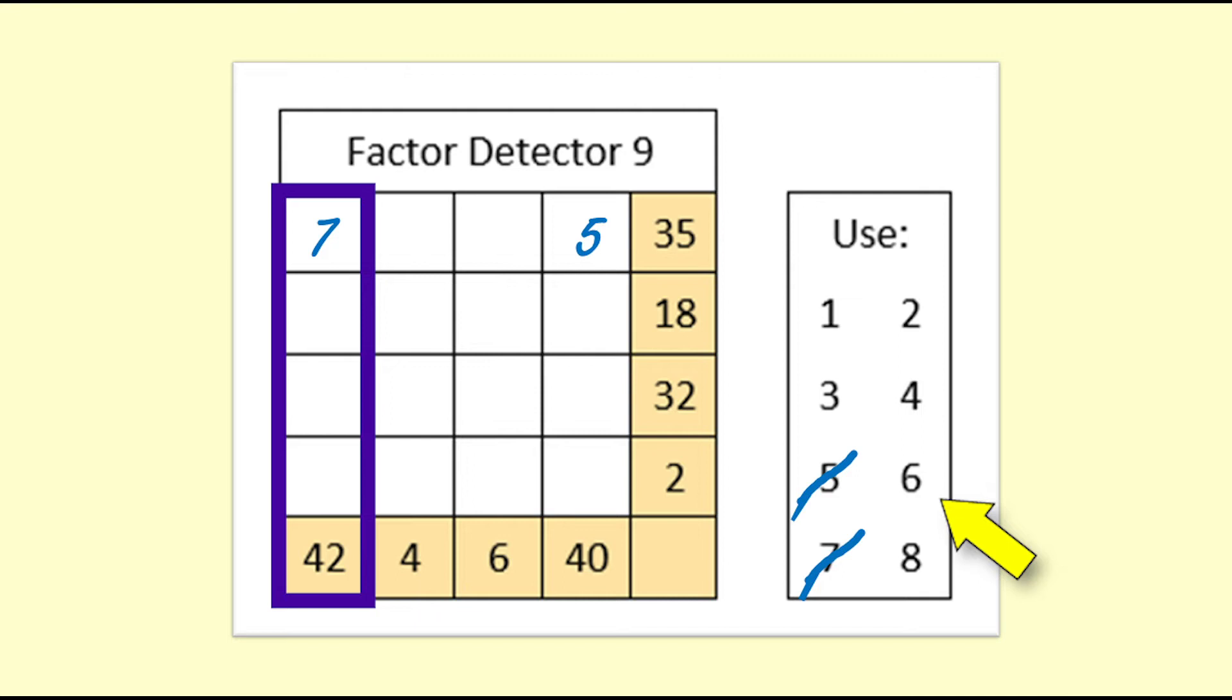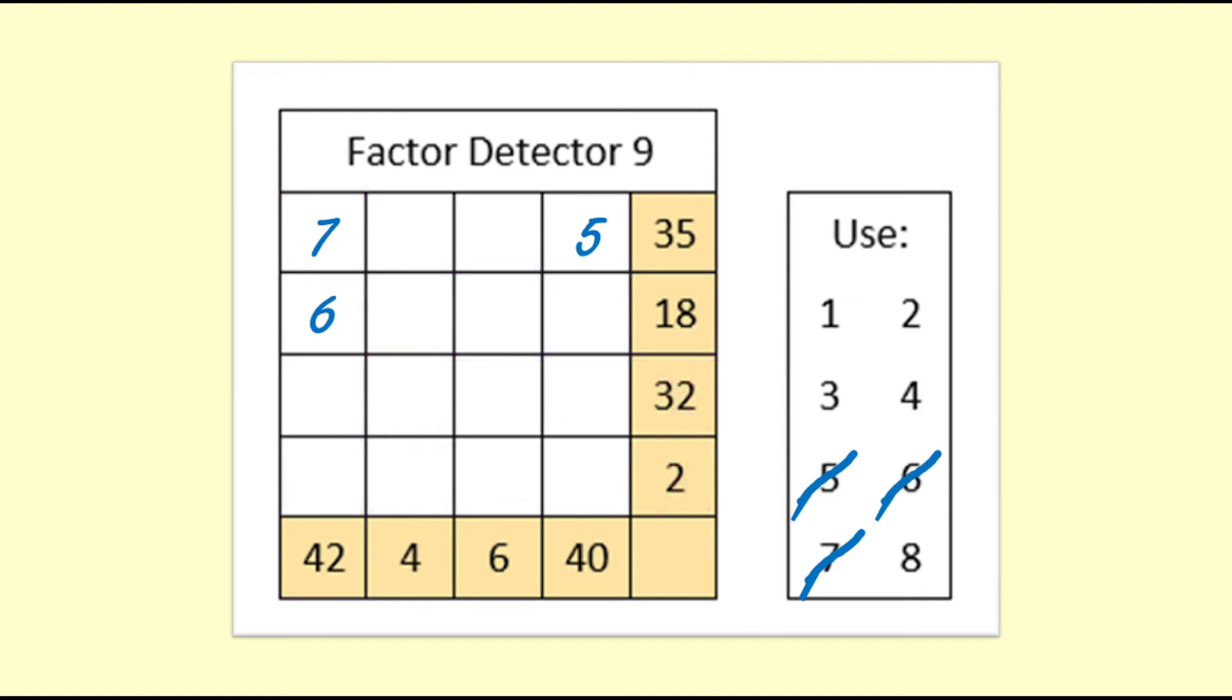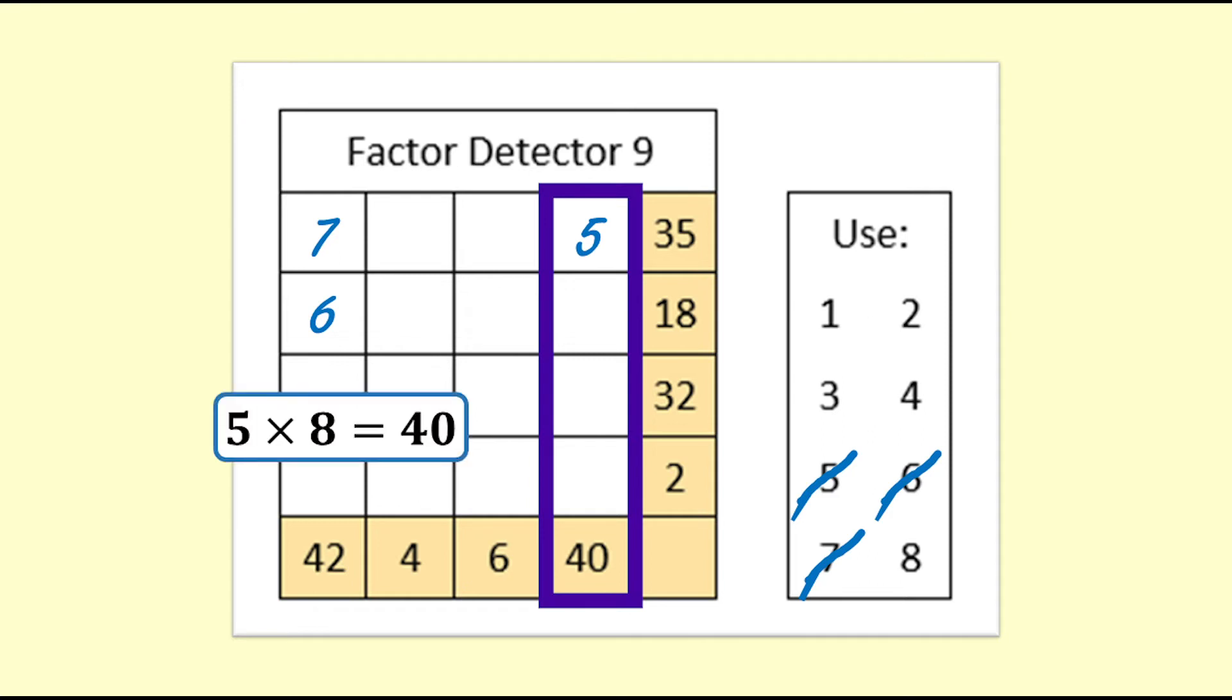But where? 6 goes into 18 and not into 32 or 2, so we will put the 6 in the 18 row and cross off the 6. I think I'll look at the 40 column now. 5 times what is 40? 5 times 8 is 40.